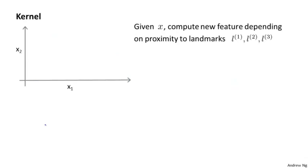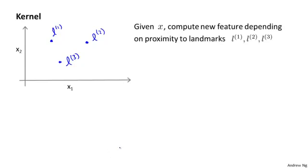Here's one idea for how to define new features f one, f two, f three. On this slide I'm going to define only three new features, but for real problems we'd define a much larger number. In the feature space of x one and x two — leaving out the intercept term x zero — I'm going to manually pick a few points. I'll call this point L1, a different point L2, and a third one L3. I'm going to call these three points landmarks: landmark one, two, three. What I'm going to do is define my new features based on these landmarks.